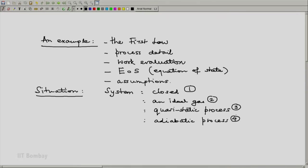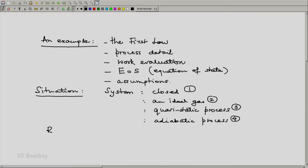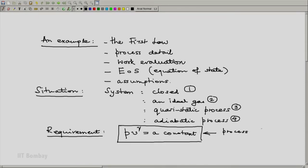This may not be the complete specification. We may need to assume additional pieces of information so as to reach our goal or maybe to simplify the process. The requirement is to show that under these conditions with appropriate assumptions, the process is representable by this relation: PV raised to gamma equals a constant. Show this, and what additional pieces of information we need.